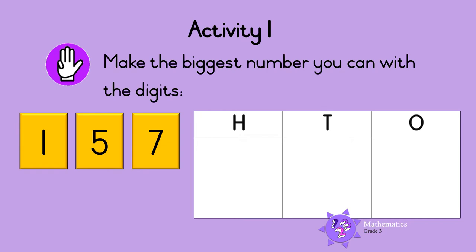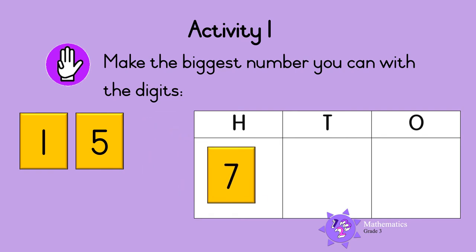To make the biggest number that you can, write the digit with the highest value in the hundreds column. Seven is the highest number, so seven goes in the hundreds column. Write the digit with the lowest value in the ones column.